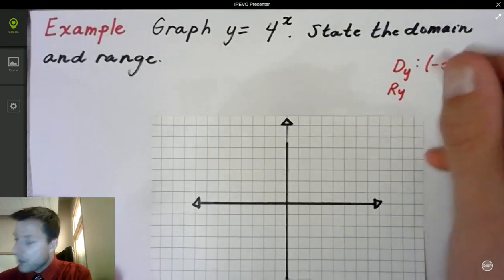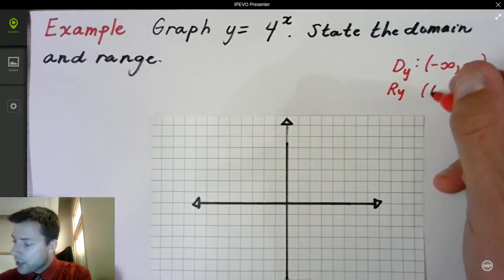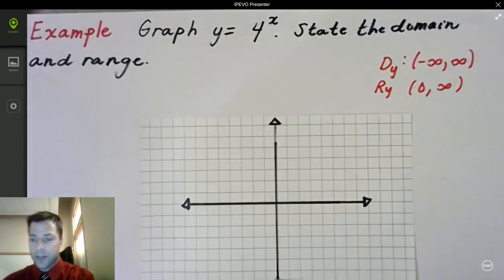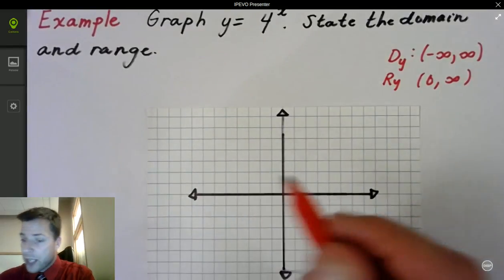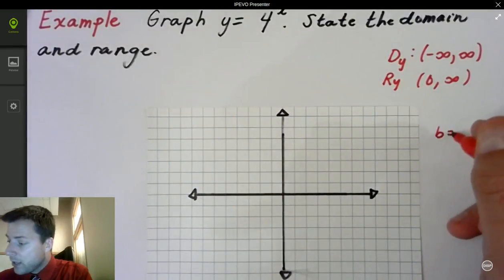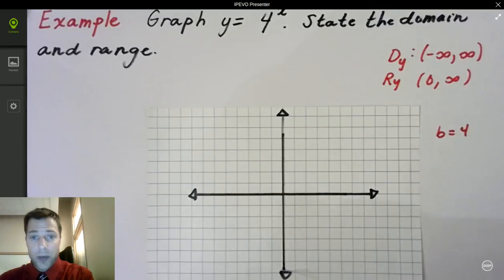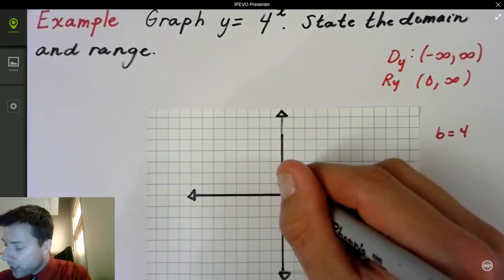The range, we haven't done anything to it, is going to be from 0 to infinity, positive real numbers. So when you graph a function like this, we can look at our b value being 4. The first point, you remember the key points, was 0, 1, which is right here.